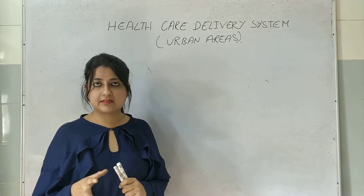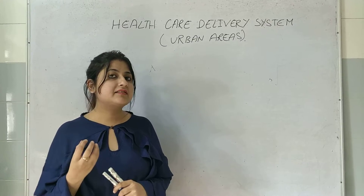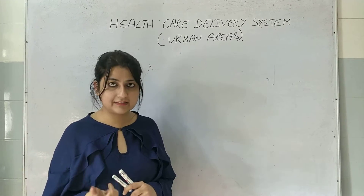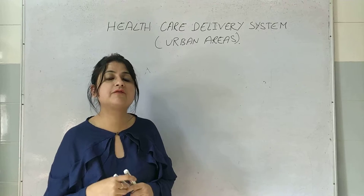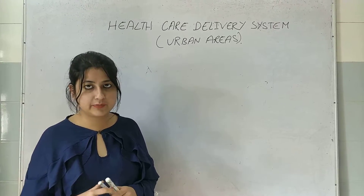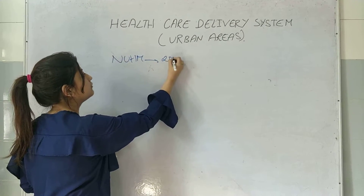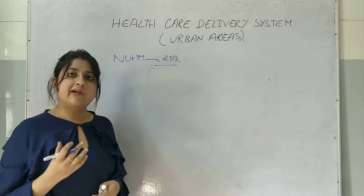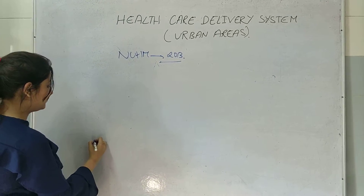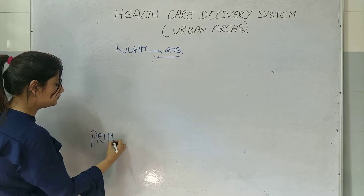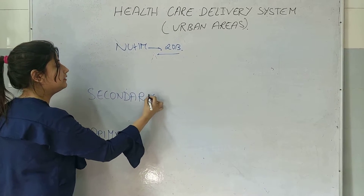Initially in the urban system, healthcare was dependent only on the tertiary level. But there is now provision of primary as well as secondary level of health system in urban areas also. This was possible with the formation of the National Urban Health Mission in 2013. So when NUHM was created in 2013, even in urban areas, healthcare started to be delivered via three levels: primary, secondary, and tertiary.